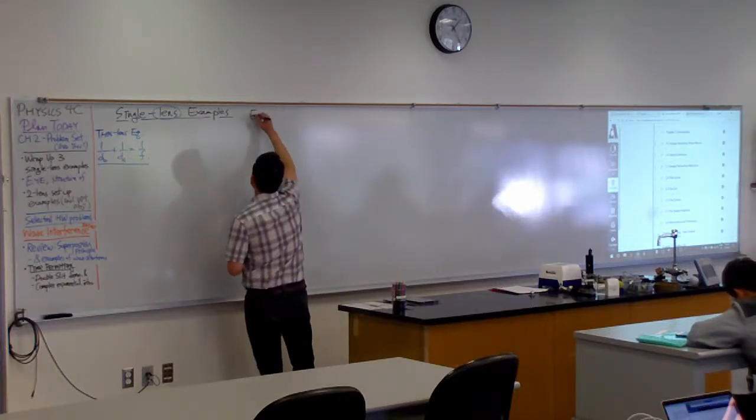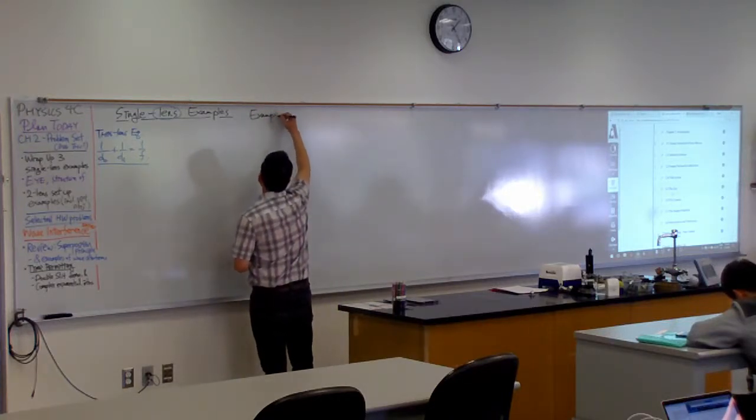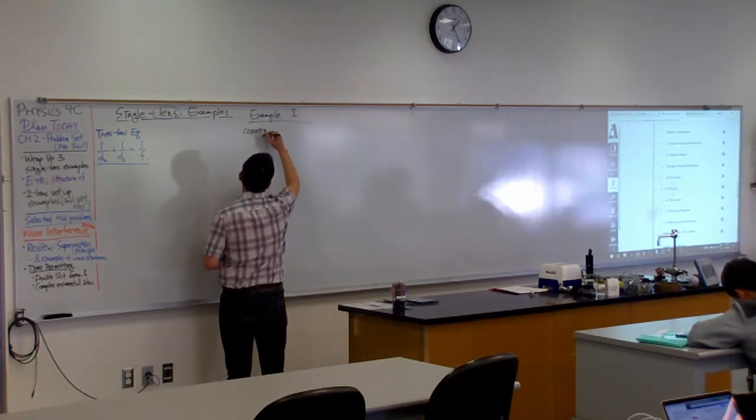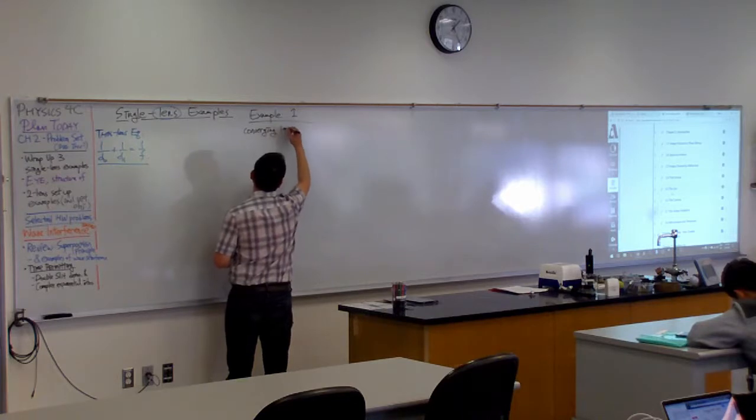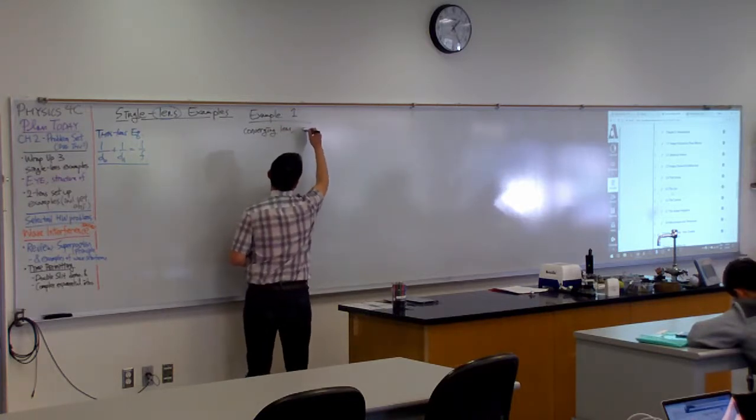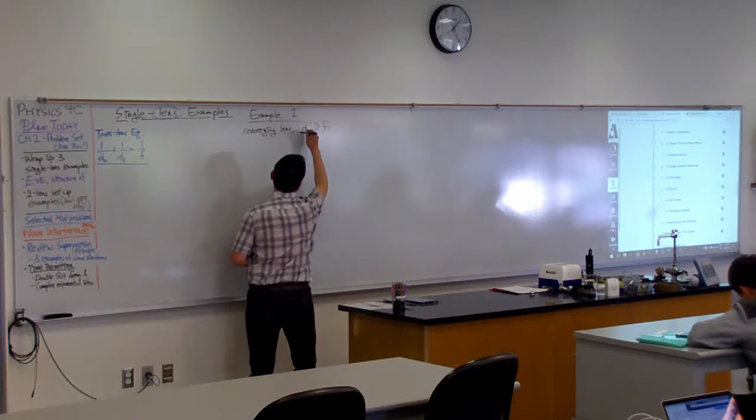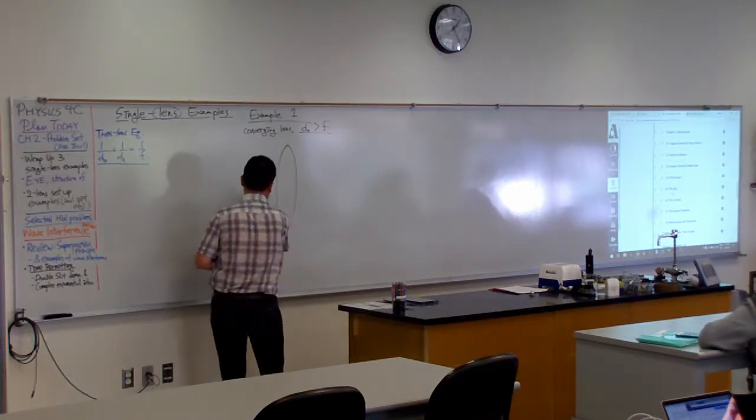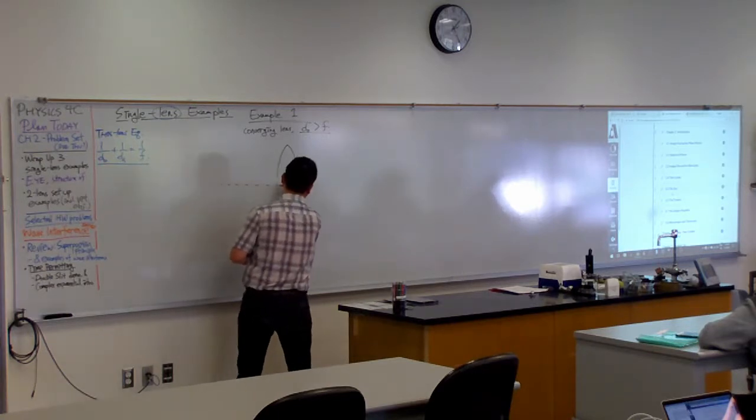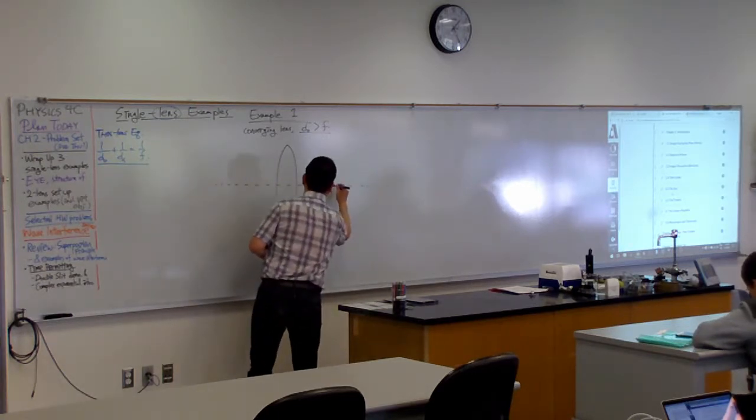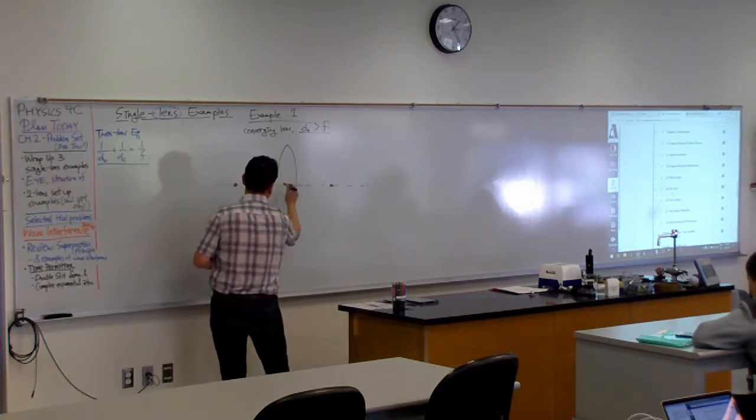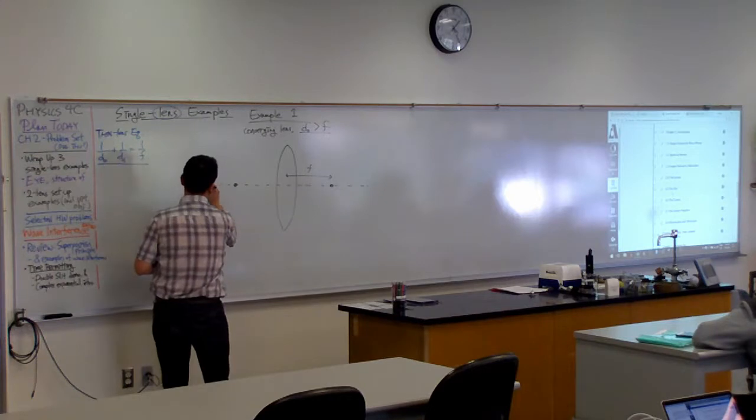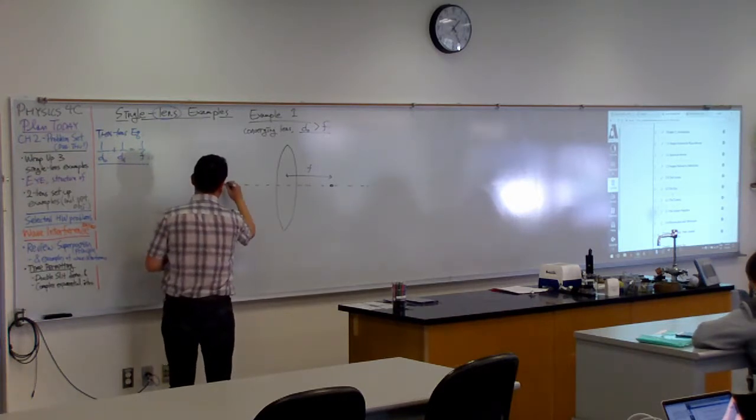So, example one is with a converging lens, and the object distance is greater than the focal length. So, here's the lens. If this is the focal length, then the object is placed somewhere out here, for example.